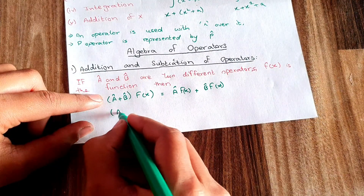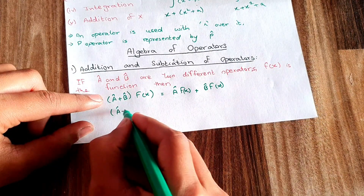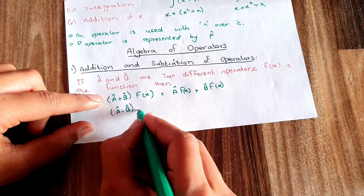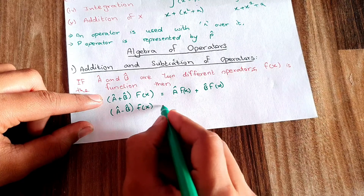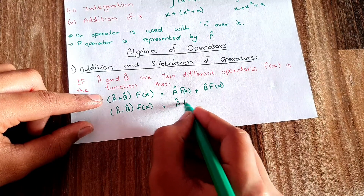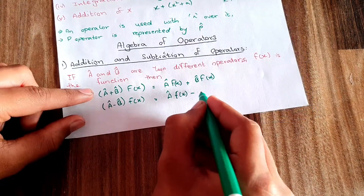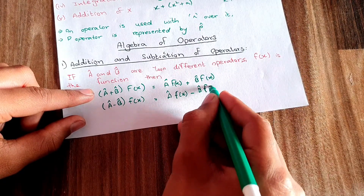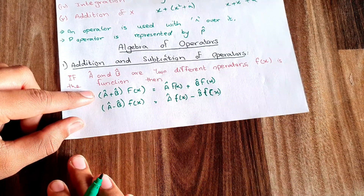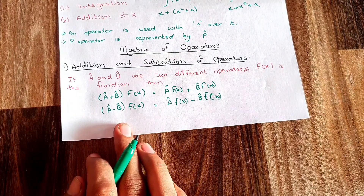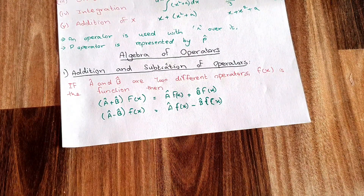Similarly, if two operators are being subtracted from each other and applied on f(x), the answer comes out to be A-hat f(x) minus B-hat f(x). This is how operators should be added and subtracted on a function.